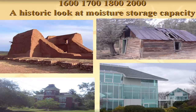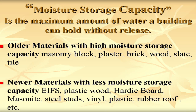In the old days, homes were made of brick and stone. In the 1600s they made mud homes, which held a lot of moisture and then dried. They went to old board lumber cut from 100-year-old trees, then to brick homes in the 1800s. Today, homes are made of products like glass, steel, and asphalt that do not hold much moisture. This is called moisture storage capacity — older materials like masonry block, plaster, brick, wood, slate, and tile have higher moisture storage capacity. Newer products like PVC, plastic wood, hardy board, masonite, steel studs, vinyl, and rubber roofs have much less.